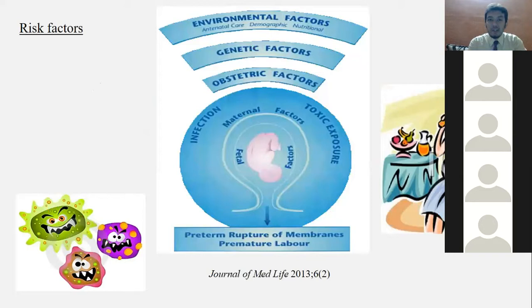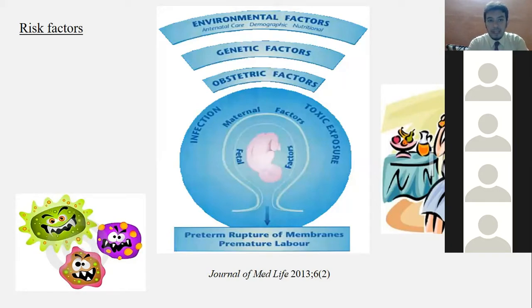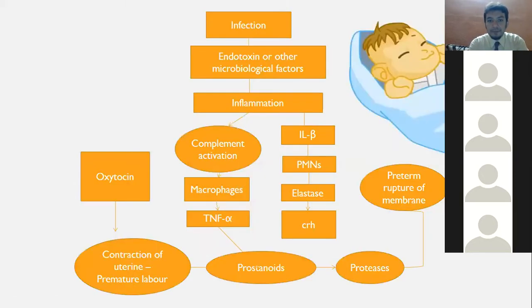There are various risk factors: environmental factors — antenatal care, nutrition, habits — as well as genetic and obstetric factors. These factors lead to infection or toxic exposure to the fetus, which leads to preterm rupture of membranes and premature labor. This figure is an important classic figure from the Journal of Medical Life, illustrating the pathology of preterm low birth weight.